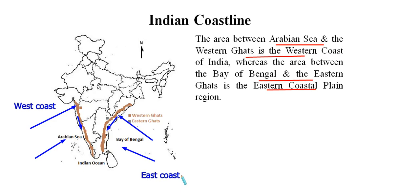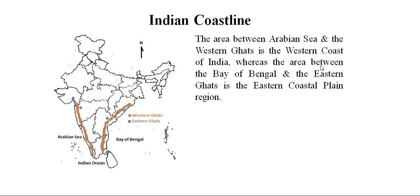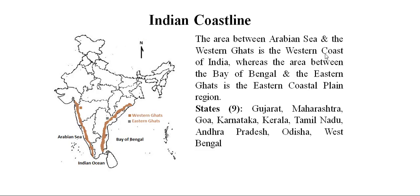If we subdivide the whole Indian coastal plain on the basis of direction, we get two subdivisions: along the western side we have the Western Coast between the Arabian Sea and Western Ghats, and along the eastern side we have the Eastern Coastal Plain between the Bay of Bengal and Eastern Ghats. Now we will discuss the states under the Indian coastal plain.